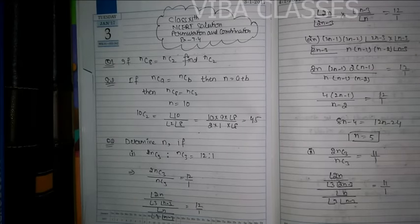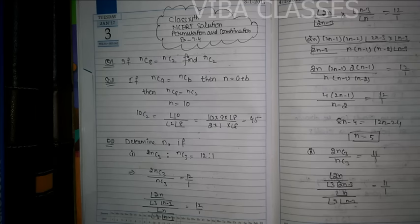Today we are going to discuss Exercise 7.4 of Class 11 NCERT solution — Permutation Combination Exercise 7.4, which is basically based on combination. We have told you about the basics of permutation combination and the difference in our last video. Here we have some questions related to combination.